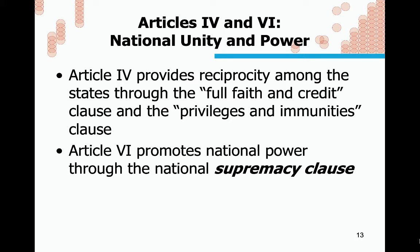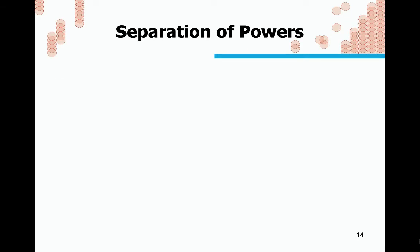Articles IV and VI address national unity and power. Article IV provides for reciprocity among states through the Full Faith and Credit Clause and the Privileges and Immunities Clause — for instance, a marriage valid in one state is recognized in another. Article VI promotes national power through the Supremacy Clause, making clear that the federal government has certain responsibilities the states cannot override.